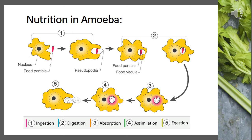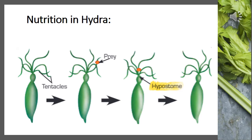In step three, the simple soluble food molecules get absorbed. In step four, they are distributed throughout the body, so assimilation takes place. In step five, the undigested food is thrown out of the body of amoeba through the process of ejection. So amoeba follows the holozoic mode of nutrition with all five steps: ingestion, digestion, absorption, assimilation, and ejection.